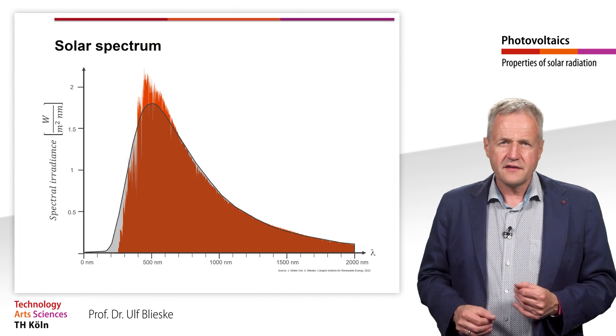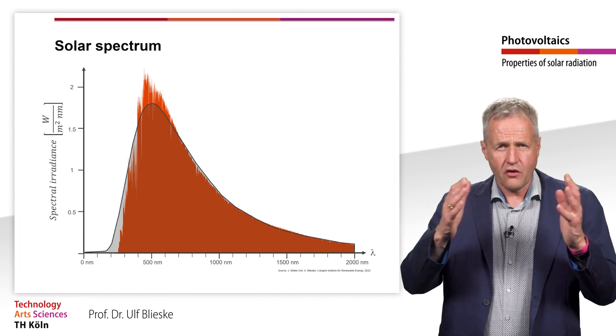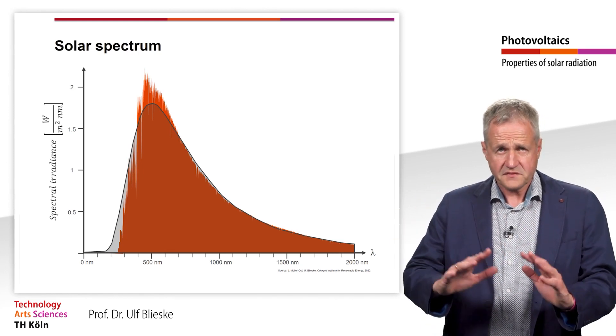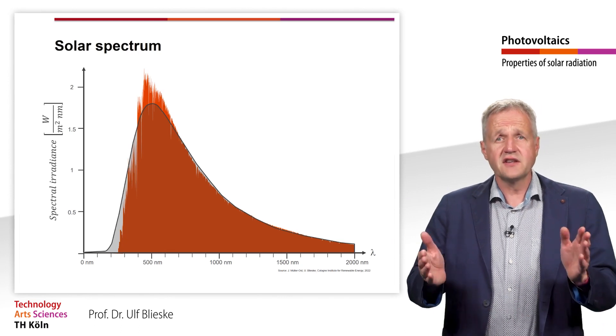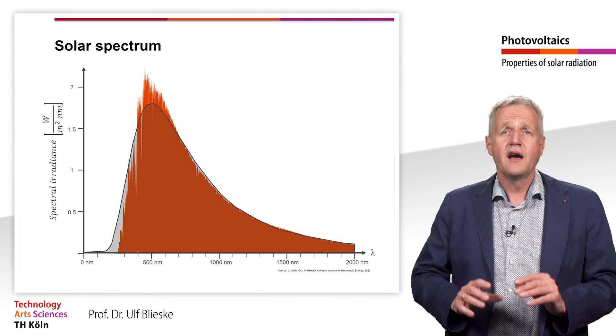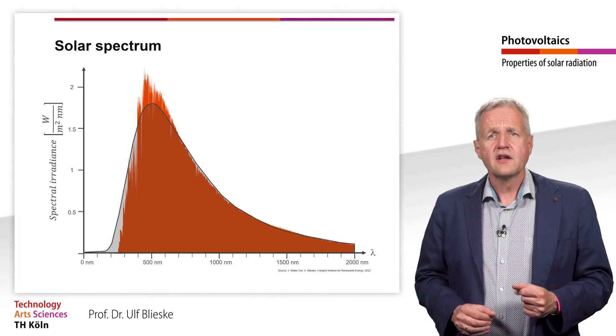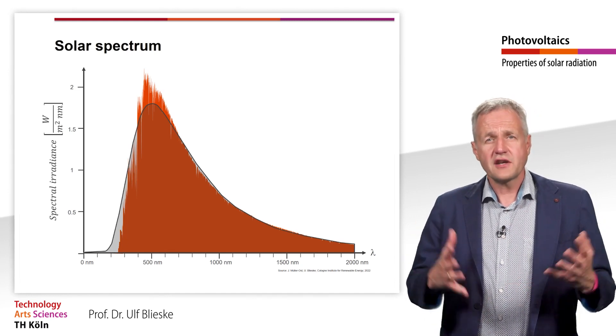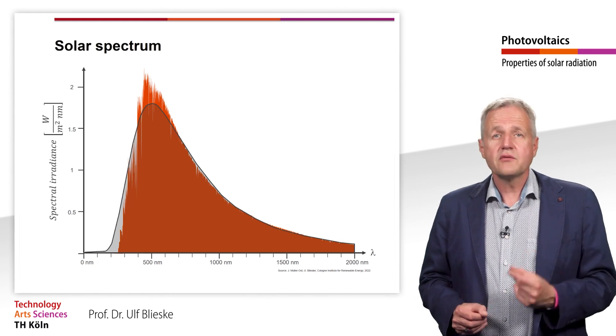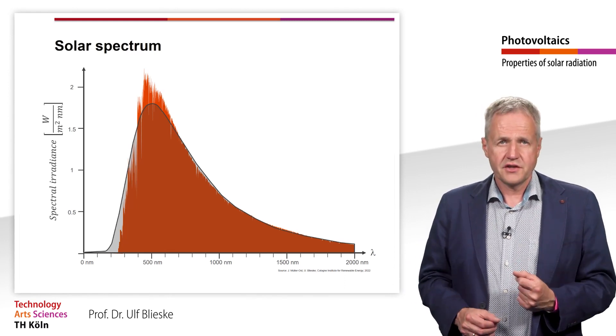However, this is not the spectrum we can measure on the earth's surface. This is because the radiation still has to pass through the earth's atmosphere. Absorption, scattering, reflection will change the spectrum significantly. We will deal with these processes in the next teaching unit.